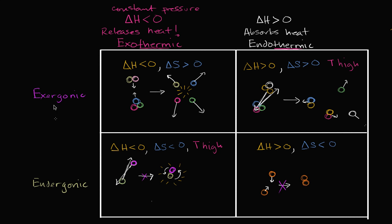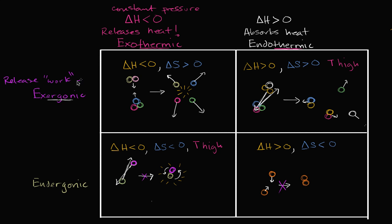Now let's look at these two characters: exergonic and endergonic. The root here is 'ergon.' You might have heard the word ergonomic — a nice ergonomic desk means it's a desk that's good to do work at. Ergon does indeed come from the Greek for work. So exergonic is a reaction that releases work energy.